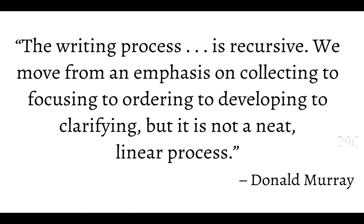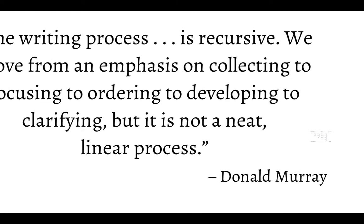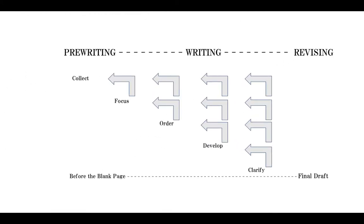Two words there need some clarification: recursive and linear. So let me try to explain it like this. Across the top and bottom of the page, you see a very linear arrangement — there are three steps in the writing process: pre-writing, writing, revising, all very linear. Down at the bottom, we start before the blank page, you follow the dotted line, you end up with a final draft — it's all very linear. But it's not really.